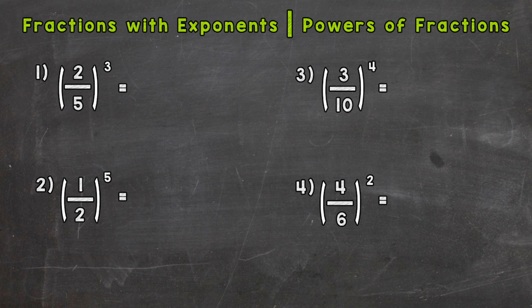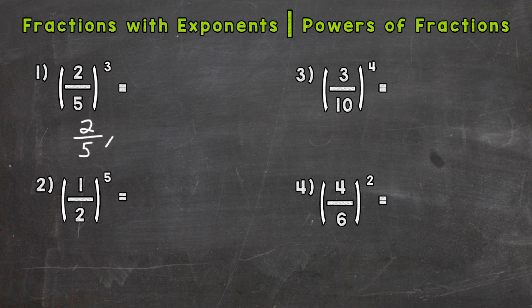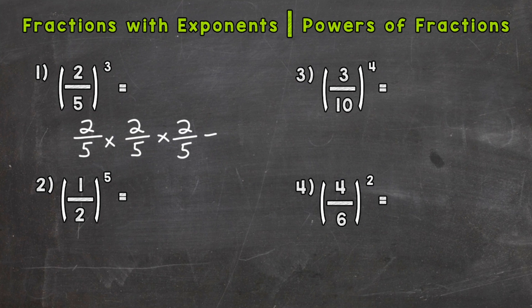As you can see, there are four problems on your screen, and we're going to go through these together in order to help you get this down. So let's jump right into number one, where we have two-fifths to the power of three. Two-fifths is our base, and we need to expand it out the number of times that the exponent indicates. Our exponent is three, so that means we need to multiply two-fifths by itself three times. That exponent of three does not mean two-fifths times three — it means expand the base, or two-fifths, out three times. Now we're ready to solve.